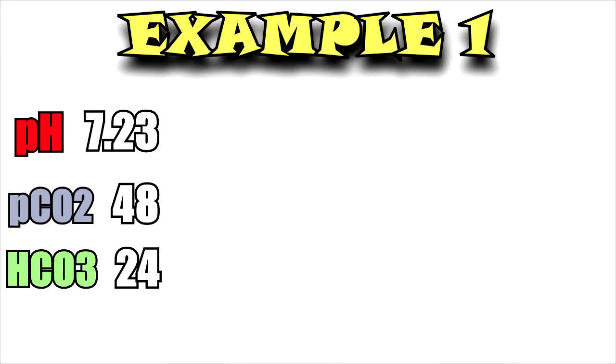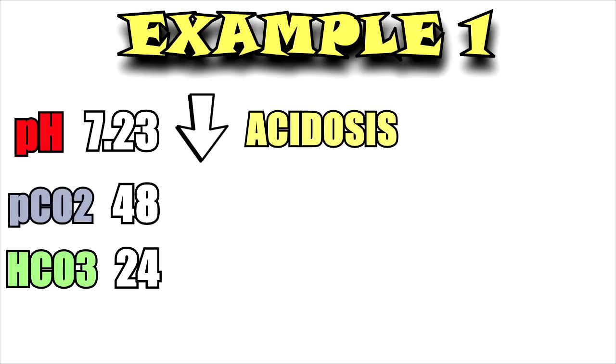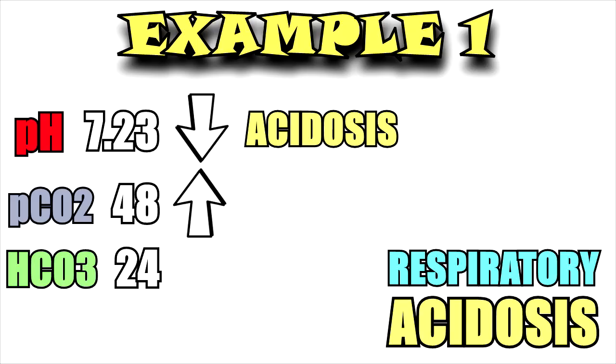Now it's time to put this into application with examples. In example one, the pH is 7.23 — that's decreased, meaning acidosis. The PCO2 is the value out of range — it's elevated, meaning respiratory acidosis. We see the inverse relationship: pH is decreased and PCO2 is increased. This is uncompensated respiratory acidosis.